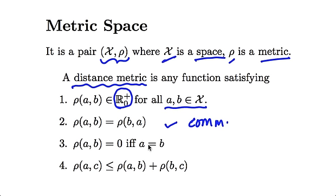The third one is just that ρ(a,b) is equal to zero if and only if a is equal to b. And if this is relaxed, then you get something like what's called a semi-metric and so on. But that's not important for the moment. And lastly, this is called the triangle inequality.